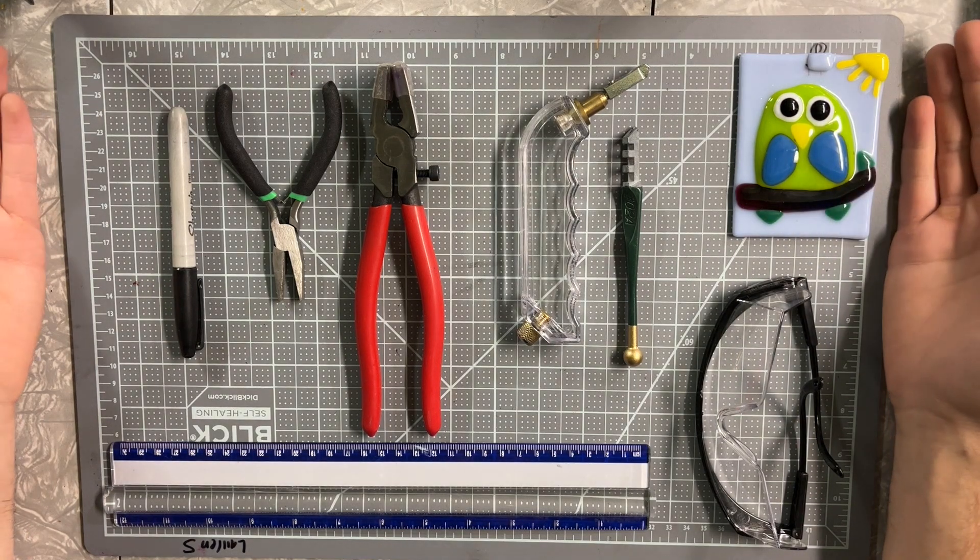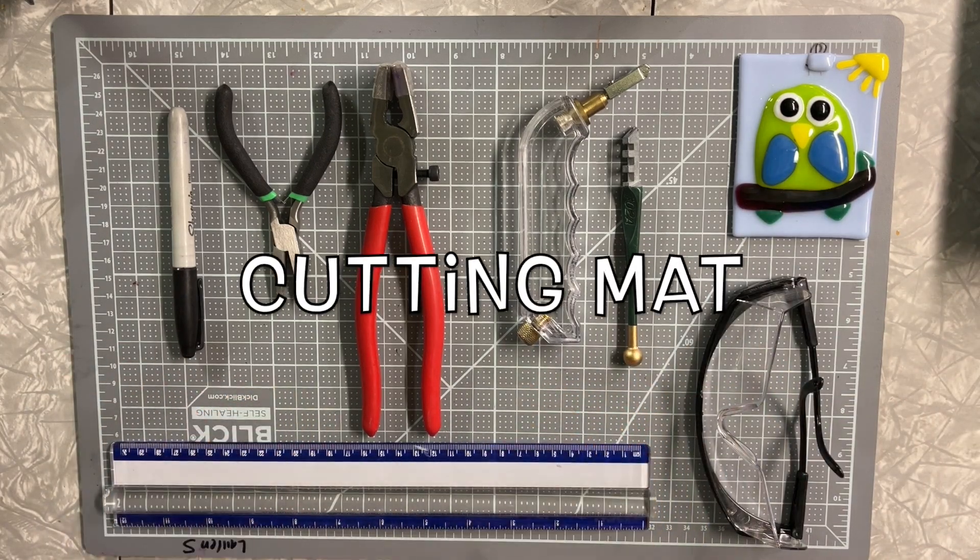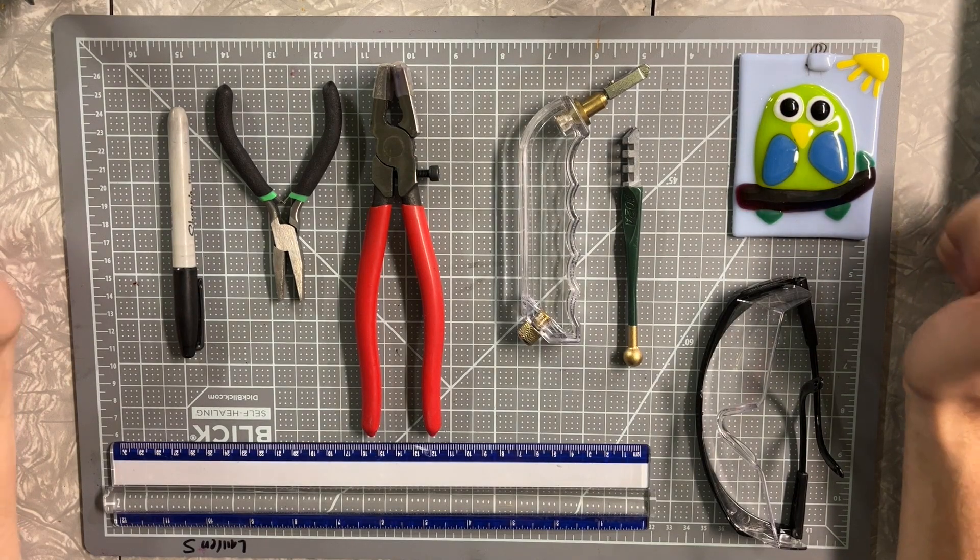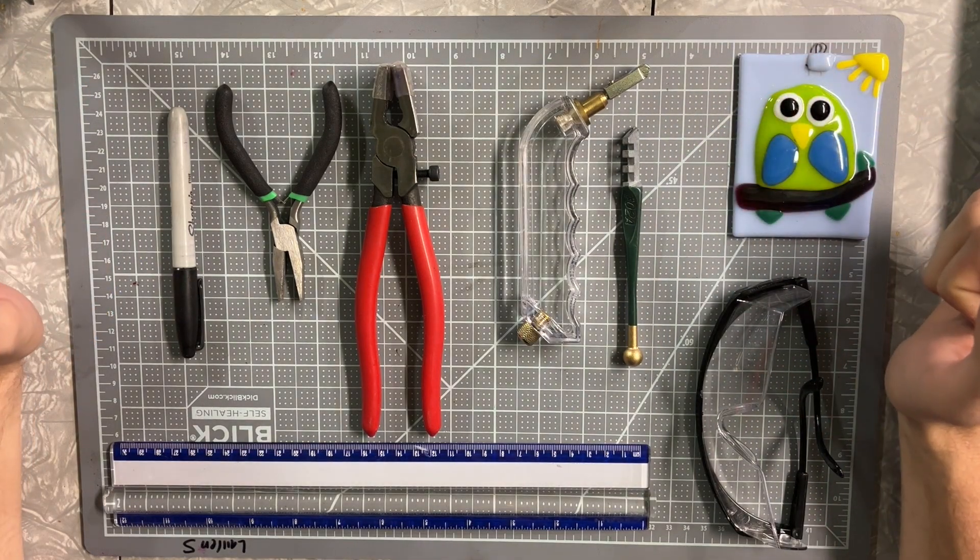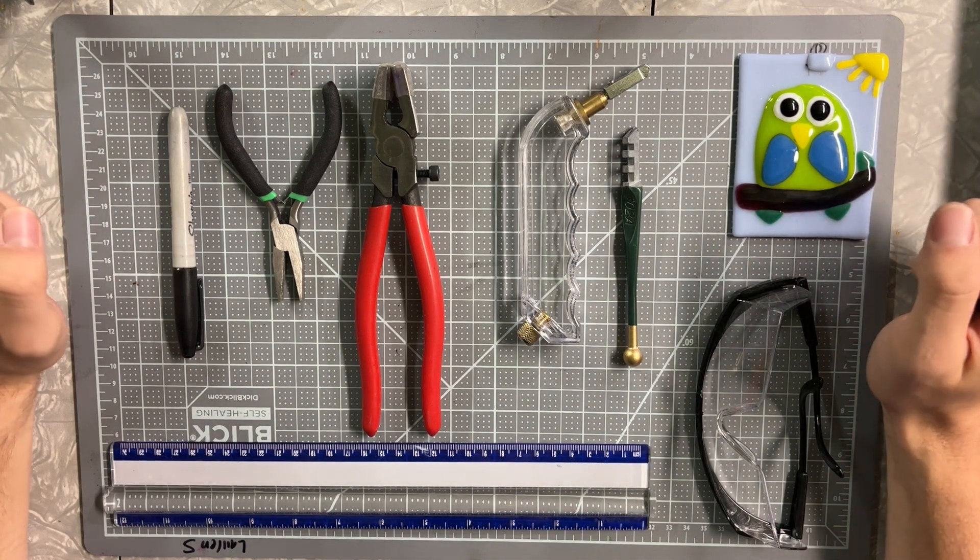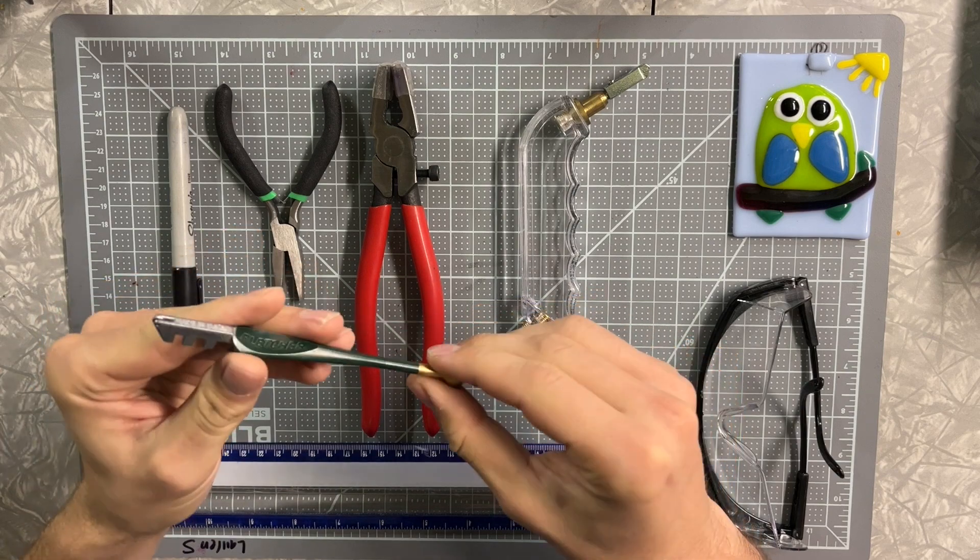The first material I want to talk about is this glass cutting mat. You can get them at most ordinary art stores, but it's really important to have a glass cutting mat. Not only does it protect the surface that we're working on, but it also protects the blade on your glass cutter.